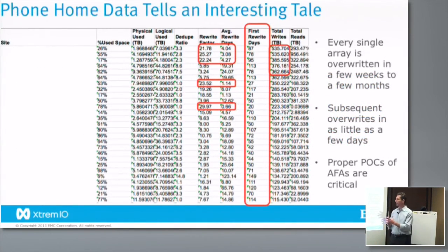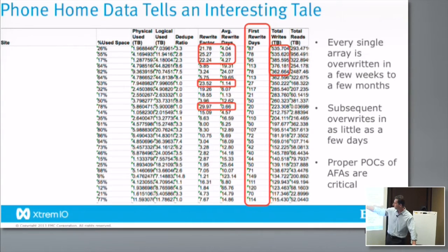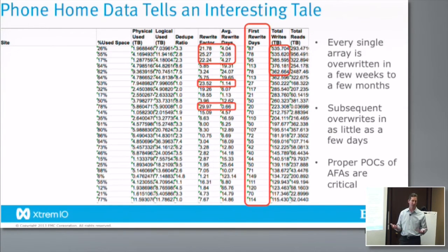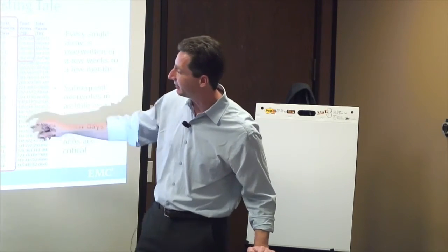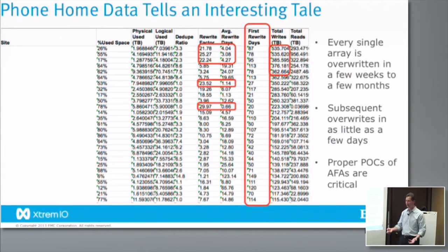Customers often think they don't need this rigorous testing because they'll never run the array more than 60% full before expanding. But flash doesn't really work that way — every flash cell will eventually be non-zero even if the array still has a lot of empty space. We track this in our phone home data across different XtreameIO clusters in the field, looking at how long it takes to overwrite the entire capacity for the first time. Here's one that took 21 days, one that took 149 days — but always within the first few months you've completely overwritten the array. Even an array at only 14% full was completely overwritten within the first 20 days.